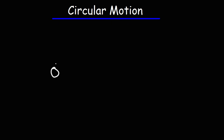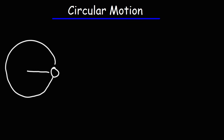So let's say we have an object that is moving in a circle. This object, even though it's moving in a circle at constant speed, because it's turning, it has an acceleration. This acceleration points towards the center of the circle, and it's called the centripetal acceleration, or AC for short. The centripetal acceleration depends on the square of the object's speed divided by the radius of the circle, which we can call R.